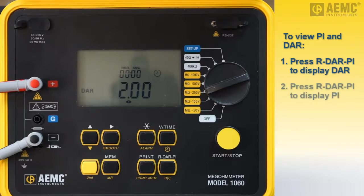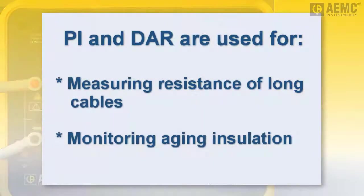With the dielectric absorption ratio displayed, press R-DAR-PI to display the polarization index. The instrument automatically calculates PI by dividing the ten-minute resistance measurement by the one-minute measurement. PI and DAR are useful on long cables or when monitoring the aging of insulation on electrical machines. Measurements of this type can be initially affected by interfering currents from capacitive charges in dielectric absorption. After test voltages have been applied for several minutes, these influences eventually cancel out each other. So, to ensure accuracy, measurements should be performed over an extended period, typically ten minutes or more.